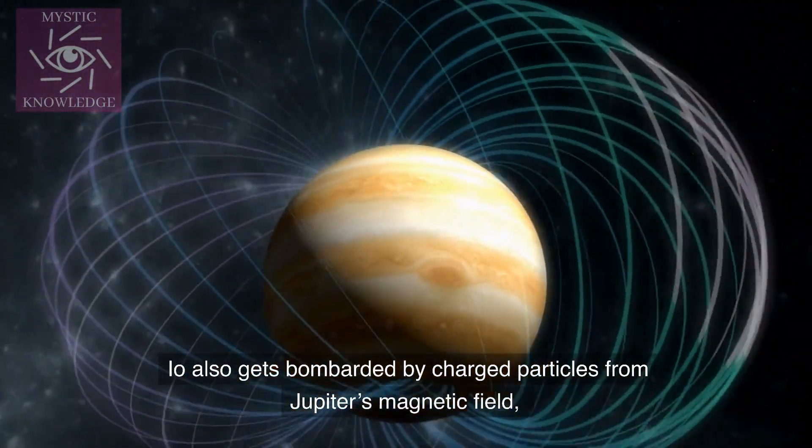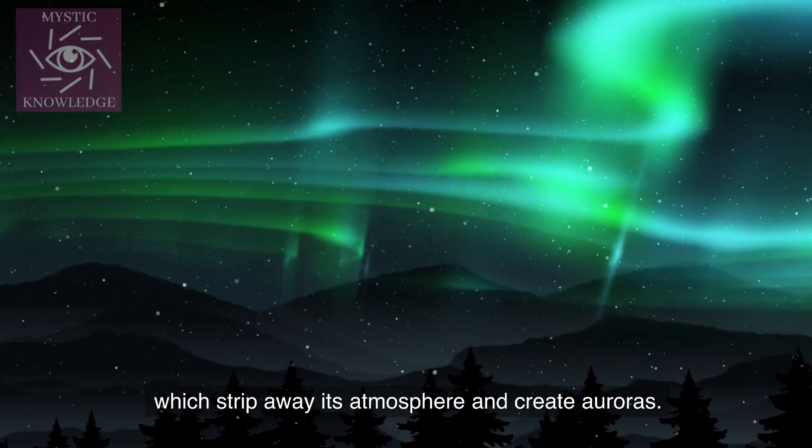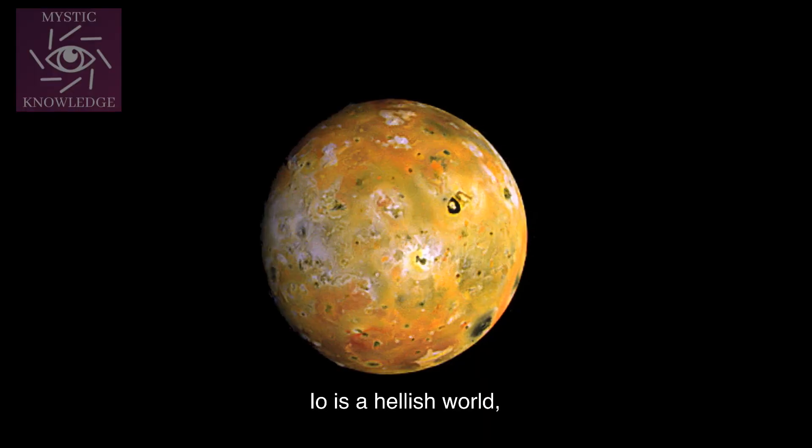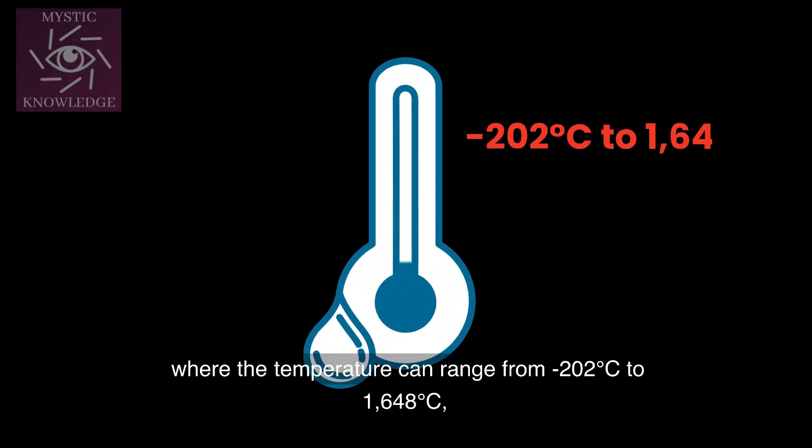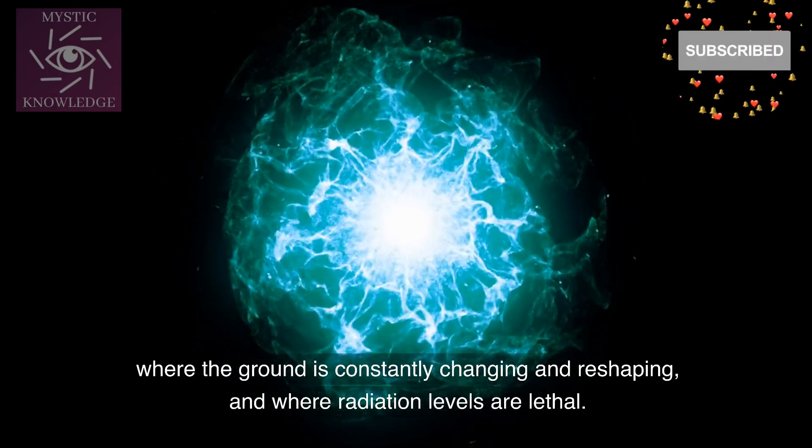Io also gets bombarded by charged particles from Jupiter's magnetic field, which strip away its atmosphere and create auroras. Io is a hellish world, where the temperature can range from minus 202 degrees Celsius to 1648 degrees Celsius, where the ground is constantly changing and reshaping, and where radiation levels are lethal.